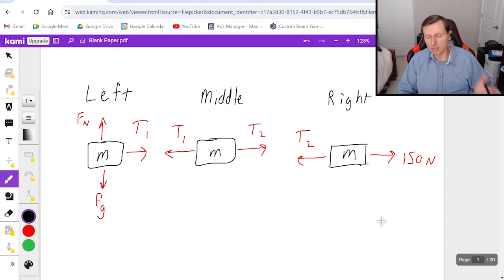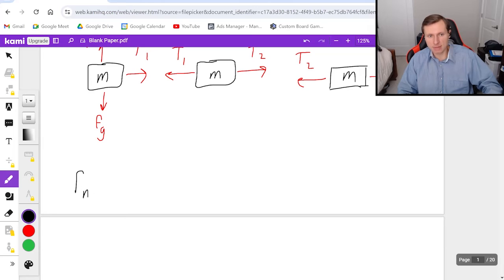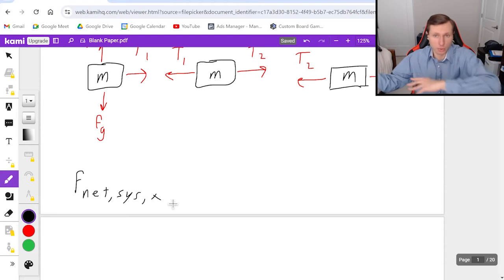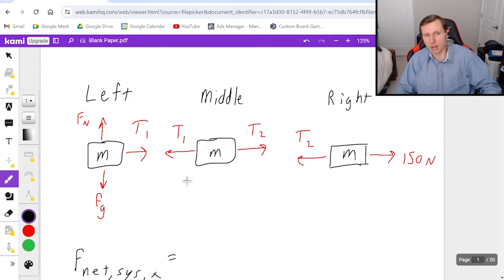And the secret is for multiple objects, if you have multiple objects and they're moving, you always want to start with F net for the system. And in this case, it's in the x direction. So what that means is, I'm now saying all the forces to the right, minus all the forces to the left. And I got to go through these boxes one by one, doesn't matter which way we start. But I'll start from right to left, since I think that makes the most sense.